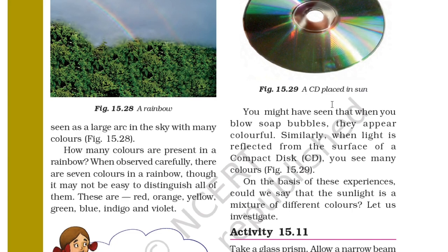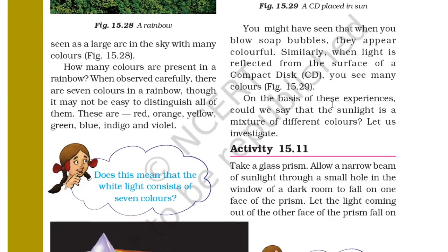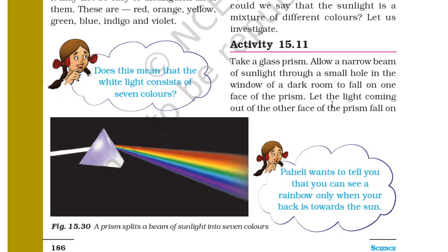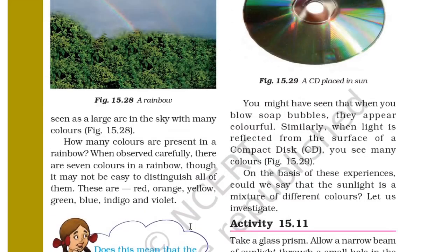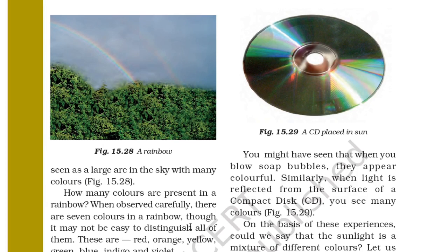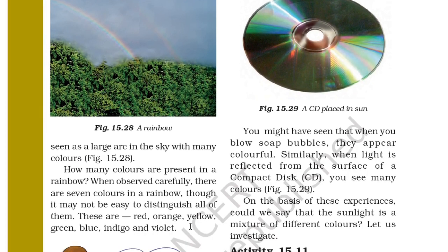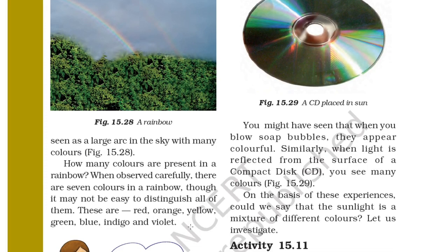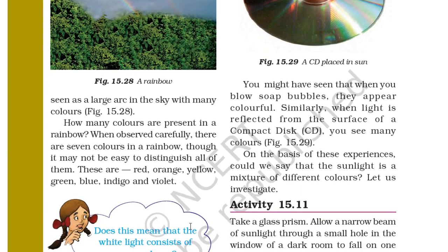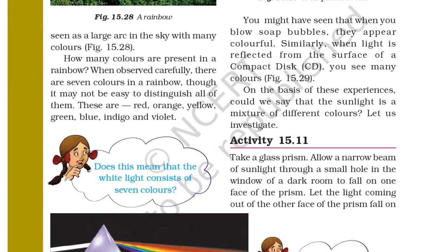Does this mean that white light consists of 7 colors? When you pass white light through a prism, you can see 7 colors — a prism splits a beam of sunlight into 7 colors. You might have also seen that a soap bubble appears colorful, and similarly when light is reflected from the surface of a compact disc (CD), you see many colors. On the basis of these experiences, could we say that sunlight is a mixture of different colors? Let us investigate in Activity 15.11.